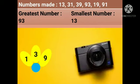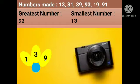Let's move to another example. Now see — three petals are given. In the first petal the number is 1, in the second petal the number is 3, and in the third petal the number is 9. From this we have to make two-digit numbers: 13, 31, 39, 93, 19, and 91. From all these numbers, 93 is the greatest number and 13 is the smallest number.